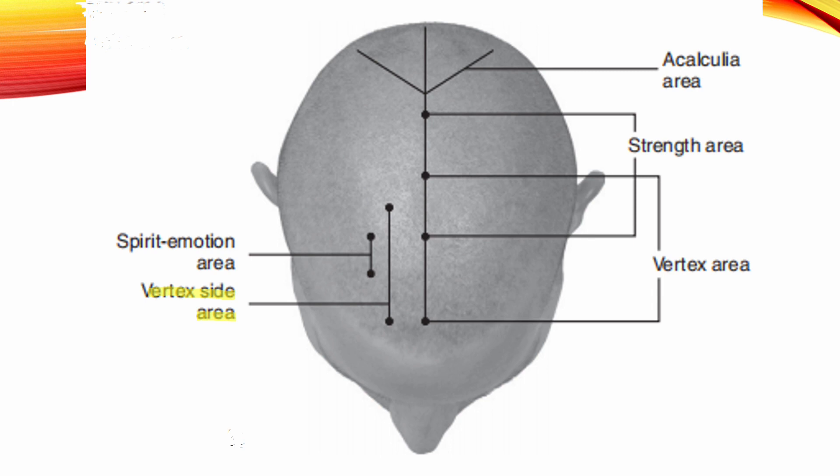Vertex Side Area. Location: 1.5 cm lateral to the anterior-posterior midline, starting at Bladder 5, connecting Bladder 7. Indication: Anesthesia in surgery.